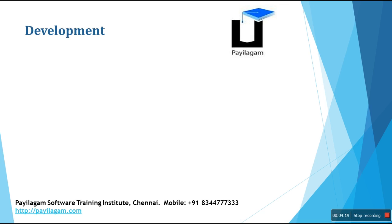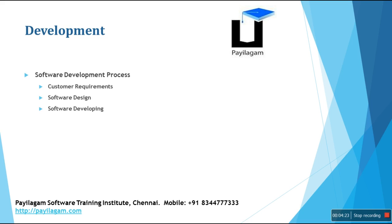On the development side, the software development process goes like this: first we gather customer requirements, then we start software designing, and once designing is done we start developing the software. To develop software we use programming languages such as C, C++, Java, .NET, or Python.